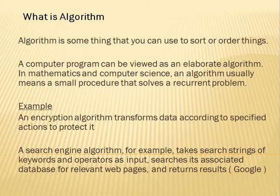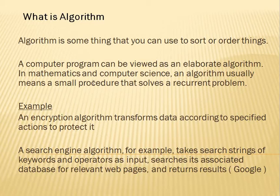By definition, an algorithm is something that you can use to sort things in a model tool. A computer program can be viewed as a model of an algorithm, which means a small procedure that is called an algorithm. Basically, algorithm is a manner to solve things, to order things.